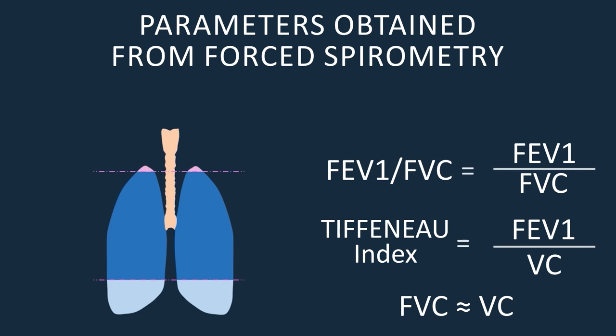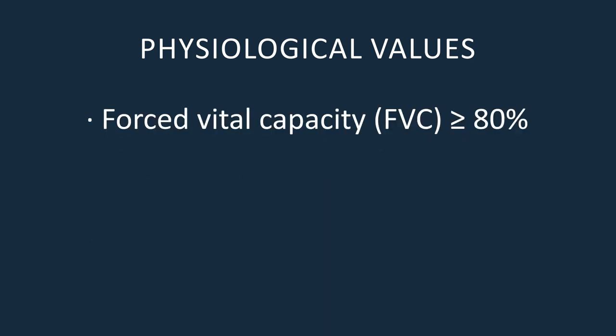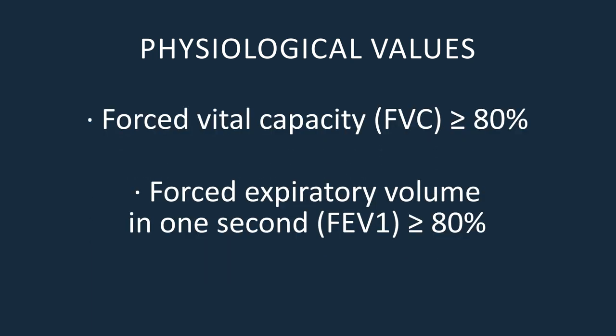Both the forced vital capacity and the FEV1 should be equal to or greater than 80 percent of the ideal value calculated for each patient depending on their characteristics such as age, height, weight, sex, etc. As we explained in our previous video, the FEV1/FVC ratio should be equal to or greater than 70 percent.